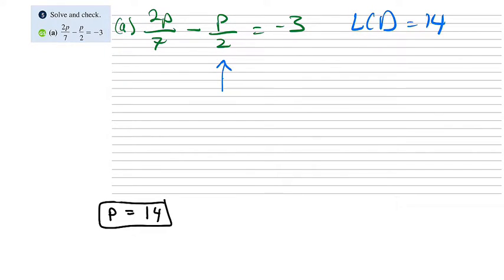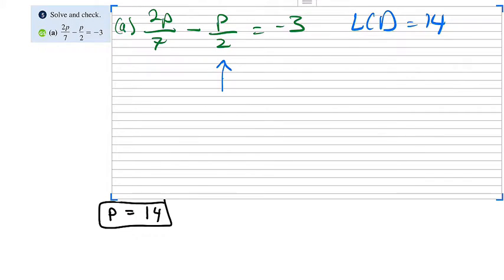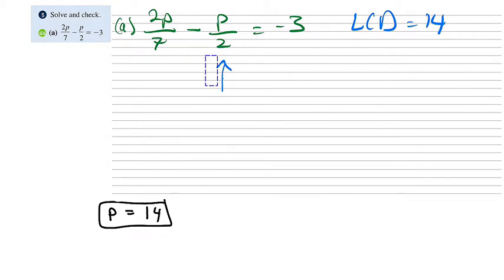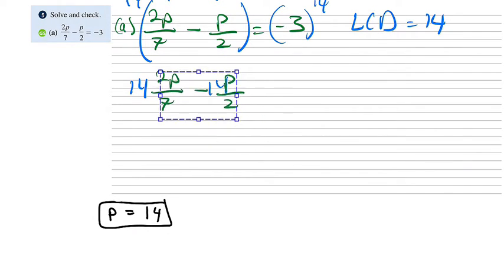So if we multiply the left and the right by 14 - what I mean by that is we're going to say this times 14 and this times 14. Now on the left we have to distribute to do it properly. So then we'll have 14 there, 14 there, and then the rest of the stuff is a repeat.